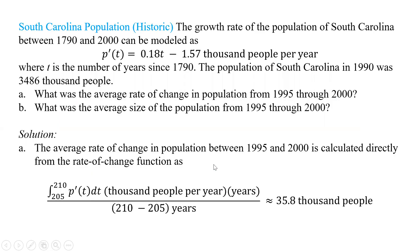Looking at this example, the growth rate of the population of South Carolina between 1790 and 2000 can be modeled as p prime of t, where t is the number of years since 1790. The population of South Carolina in 1990, which is 200 years later, was 3,486,000 people. What was the average rate of change in the population from 1995 to 2000? That's going to be 205 to 210, and we're taking the integral of our p prime of t from 205 to 210, divided by 210 minus 205. If we plug all that in our calculator, we should get about 35.8 thousand people per year, and that's our value there. Those years cancel, and we're going to get just thousands of people.